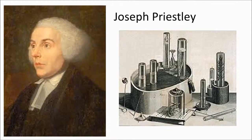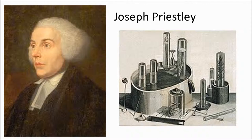Joseph Priestley carried out a really simple experiment that proved that plants produce oxygen. He put a mint plant in a closed container with a burning candle. That candle flame used up all the oxygen in the container and it went out. 27 days later, Priestley was able to re-light that candle, and that showed the plant had produced some sort of gas that allows fuels to burn — and that gas was oxygen.